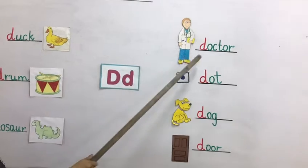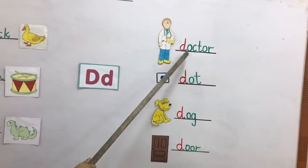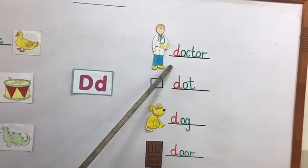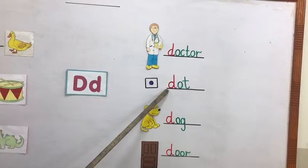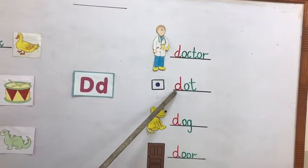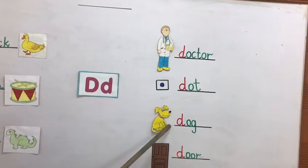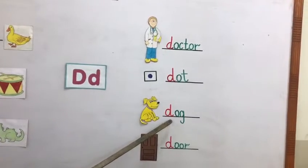Now D — Doctor. You can see a doctor in the hospital. D — Dot. D — Dot. D — Dog. And dog is a pet animal.